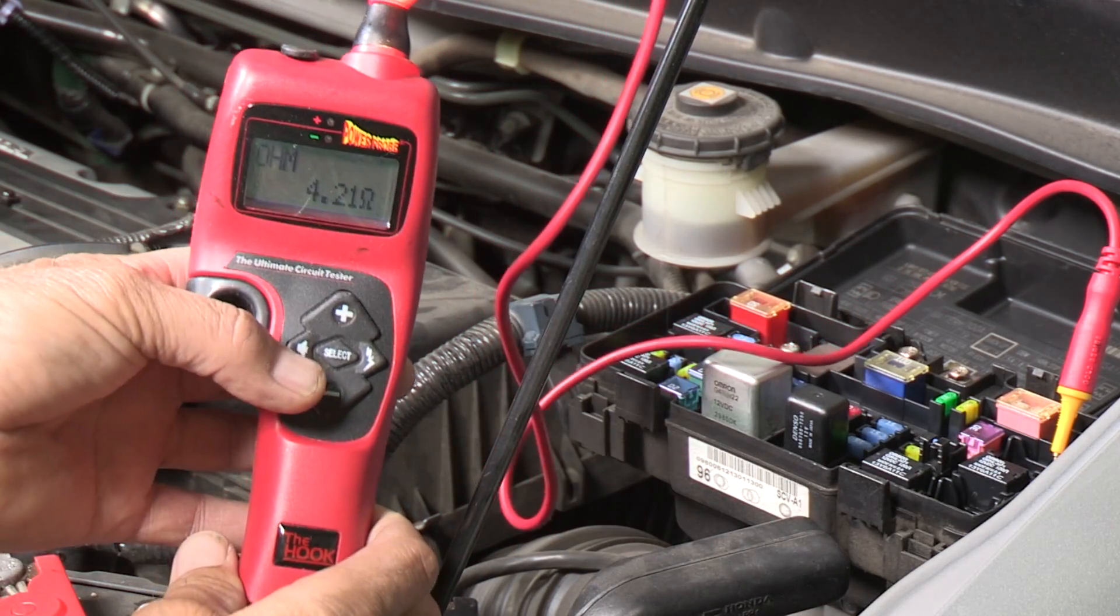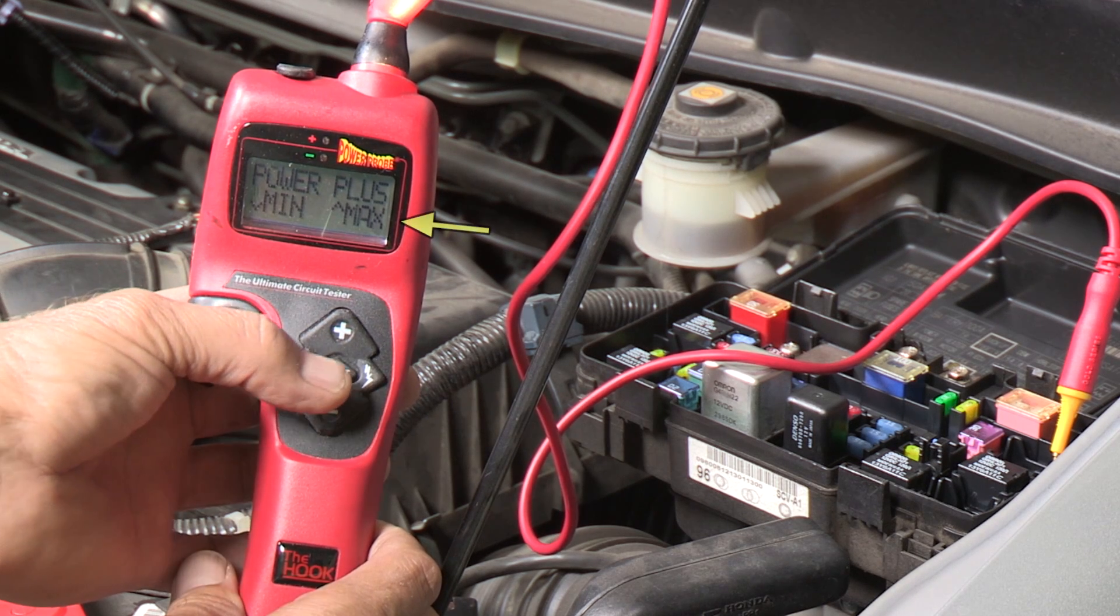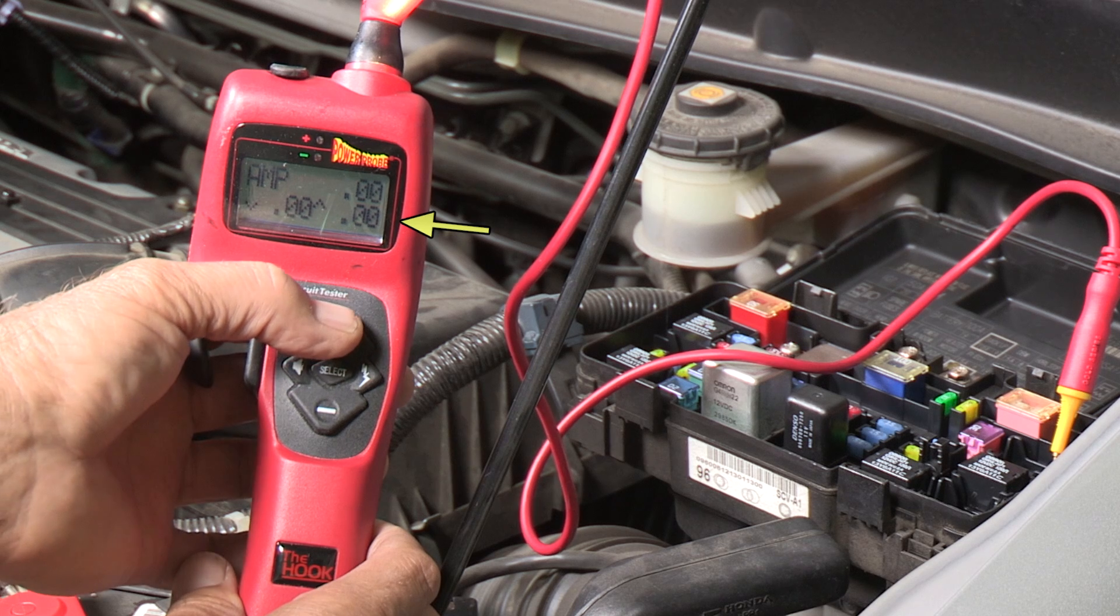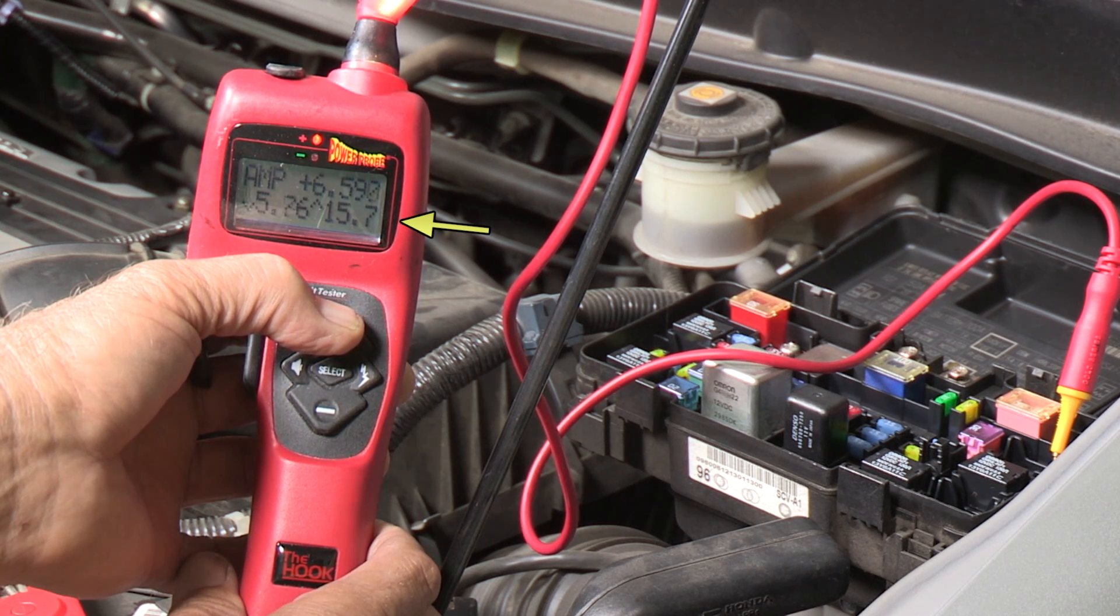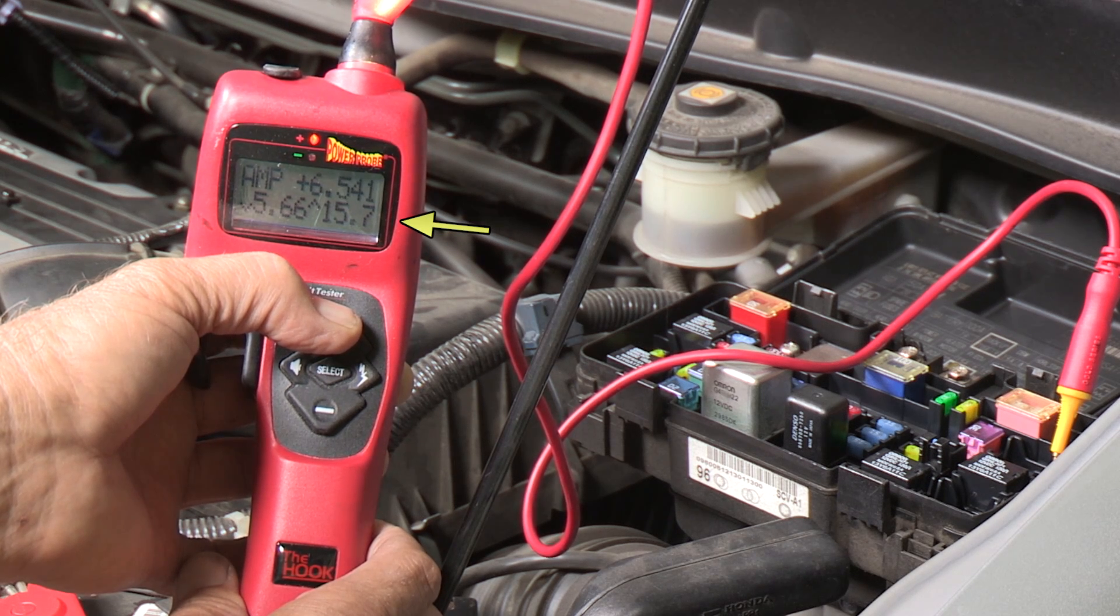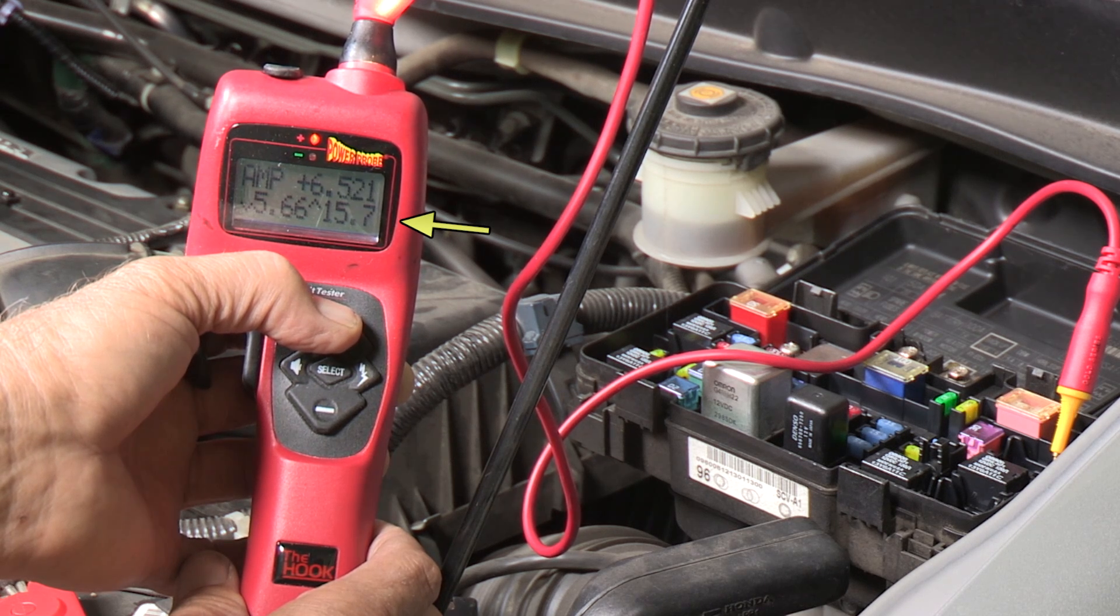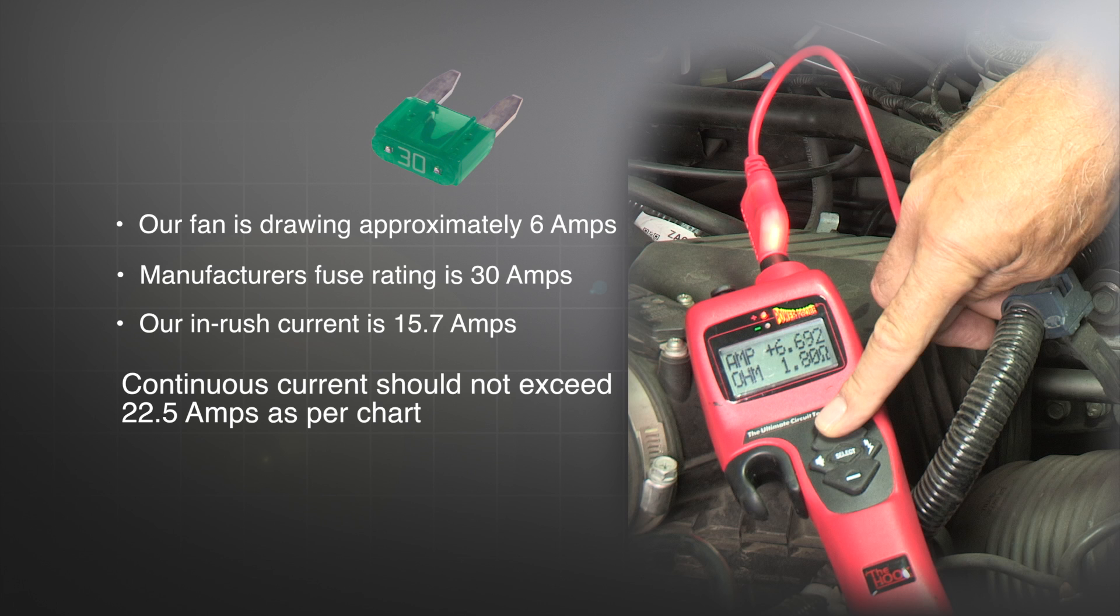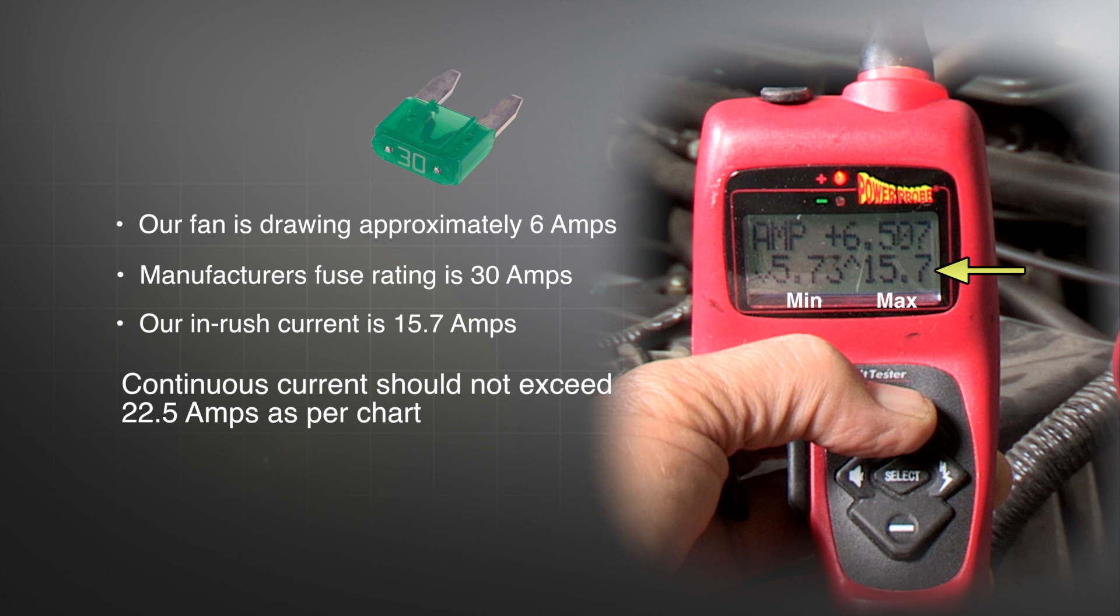Now, put the hook in power plus mode. This will capture the inrush current and measure and display the minimum and maximum current draw. Capturing the inrush current and the stabilized current can help determine the condition of a component. High current here could indicate a faulty fan motor. This is one of many valuable features built into the hook. It shows you current draw and calculated resistance, maximum and minimum current draw in real time. As a rule of thumb, continuous current should not exceed 75% of the fuse's rated value. This accommodates momentary current surges and avoids the fuse blowing prematurely. Since our fan is pulling 6 amps and the manufacturer's fuse rating for this circuit is 30 amps, our fan motor is well within specifications. Our inrush max current is also well within specifications.